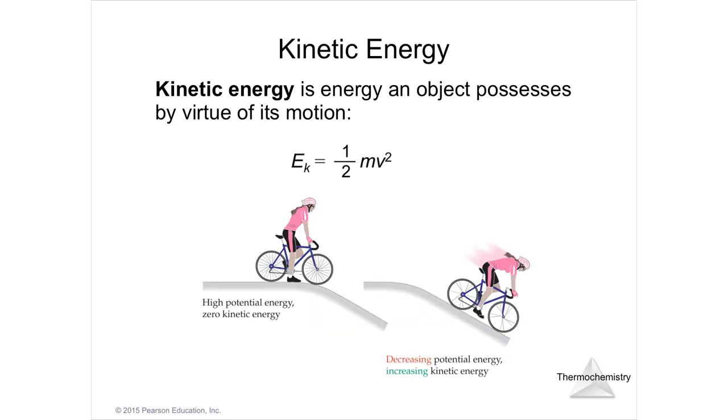There are various types of energy. The one would be kinetic energy, energy just due to motion of an object. So the formula here, E sub k, or kinetic energy, is one-half mass times the square of the velocity.